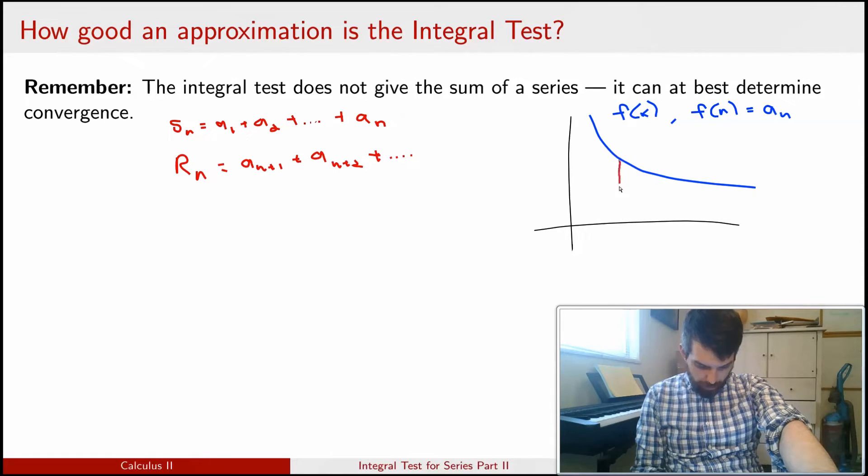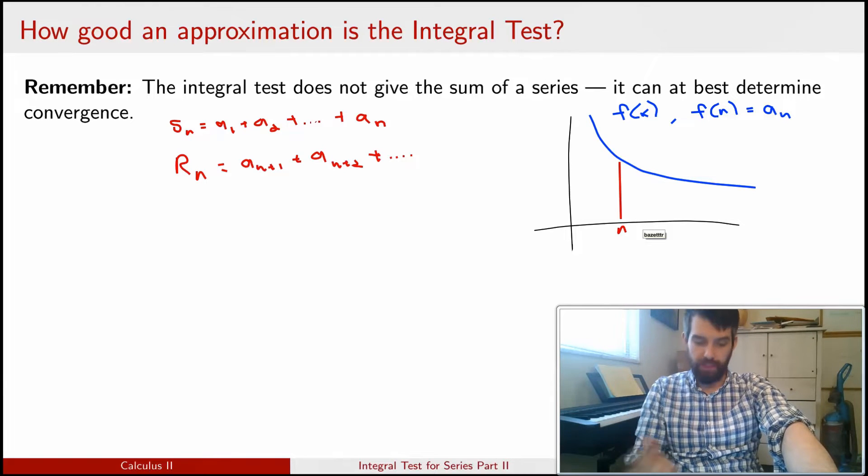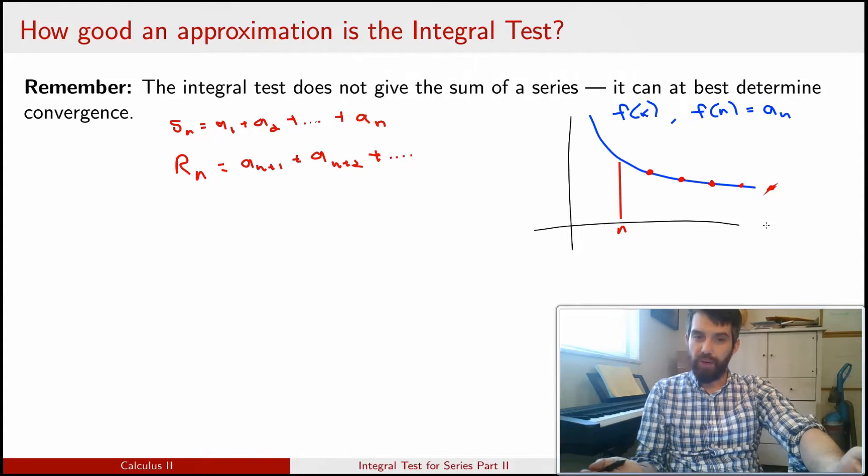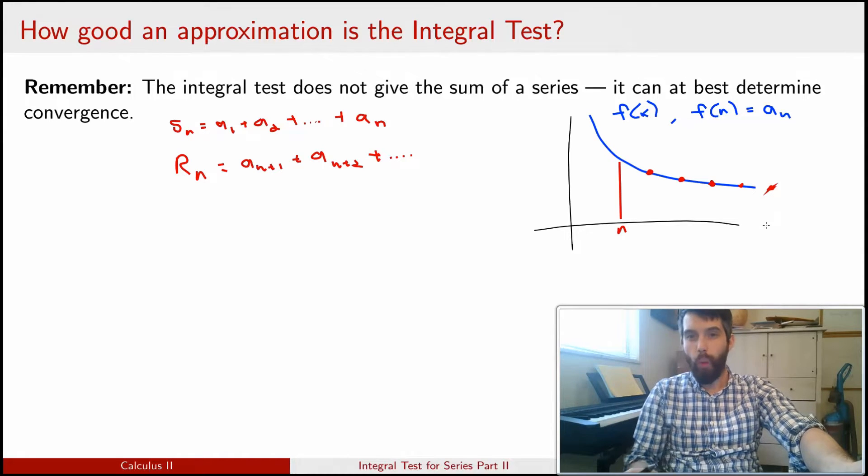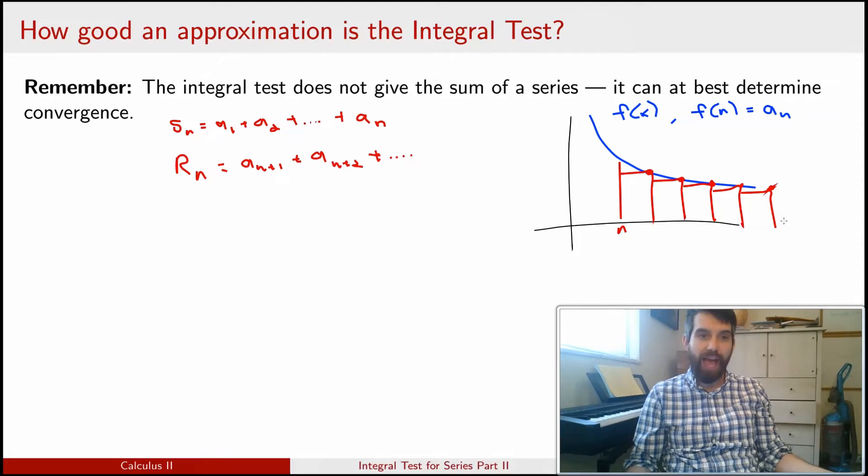I might have, for example, at some point like this one, I'll call that n, and then if I think about what Rn is, it's an+1 plus an+2 and so on. If I think about a sum of numbers, this is the same thing as a sum of the areas of rectangles, where the areas of the rectangles are going to have width 1 and then height whatever the corresponding numbers are. I can give a sort of right approximation here. This right approximation that I'm drawing for the area under the curve is the same thing as my remainder.